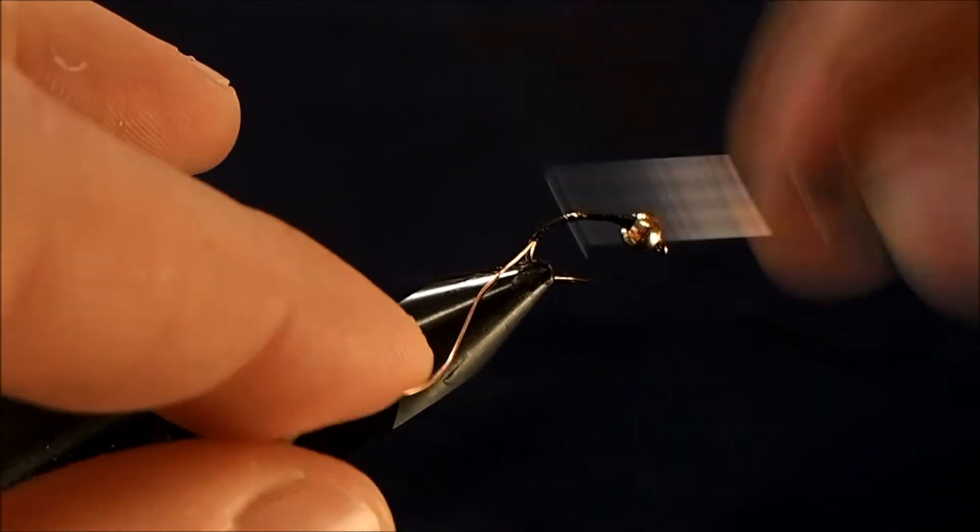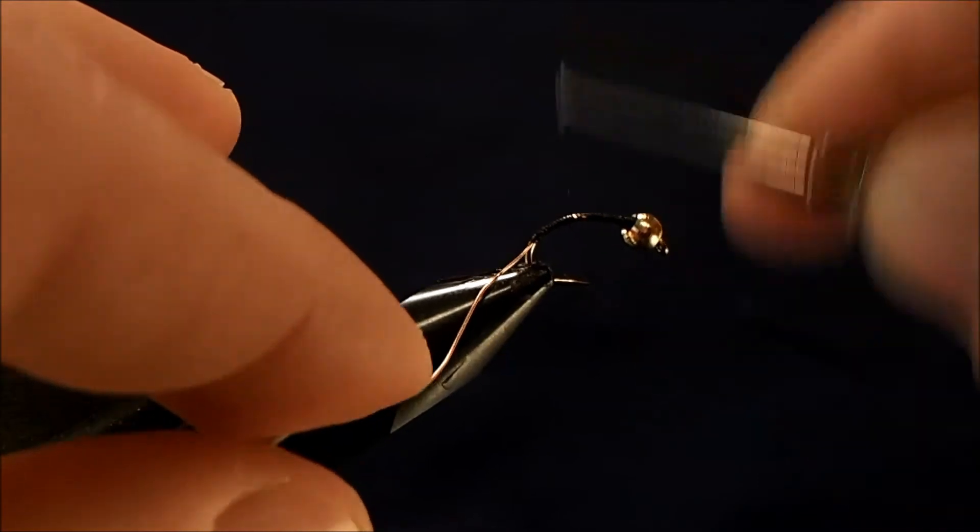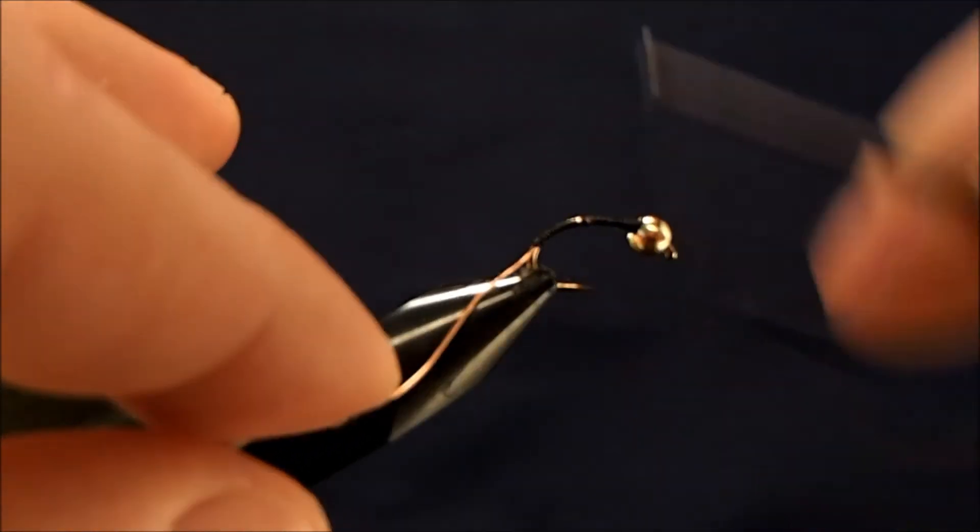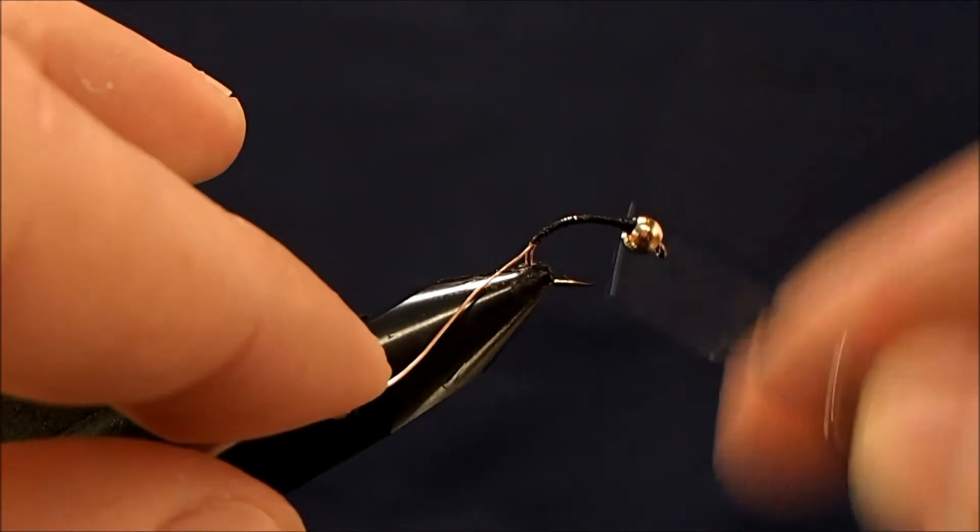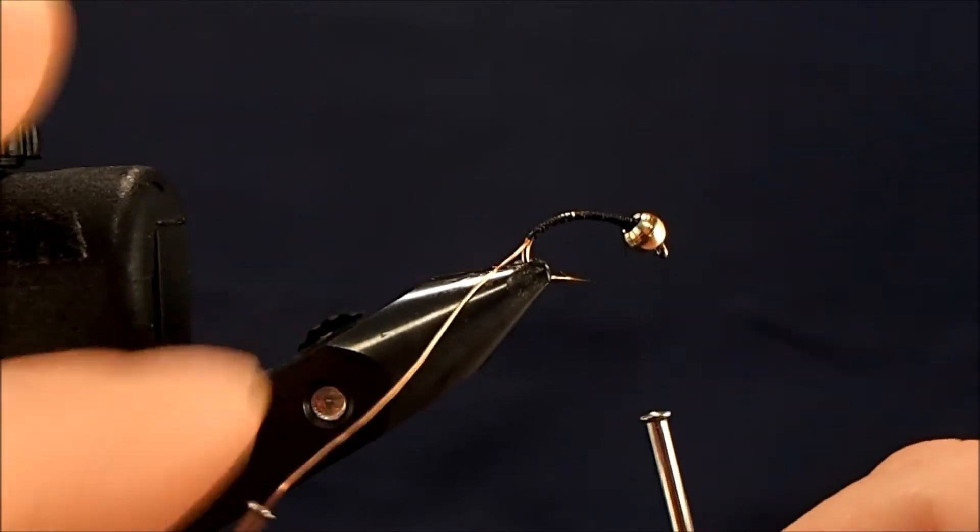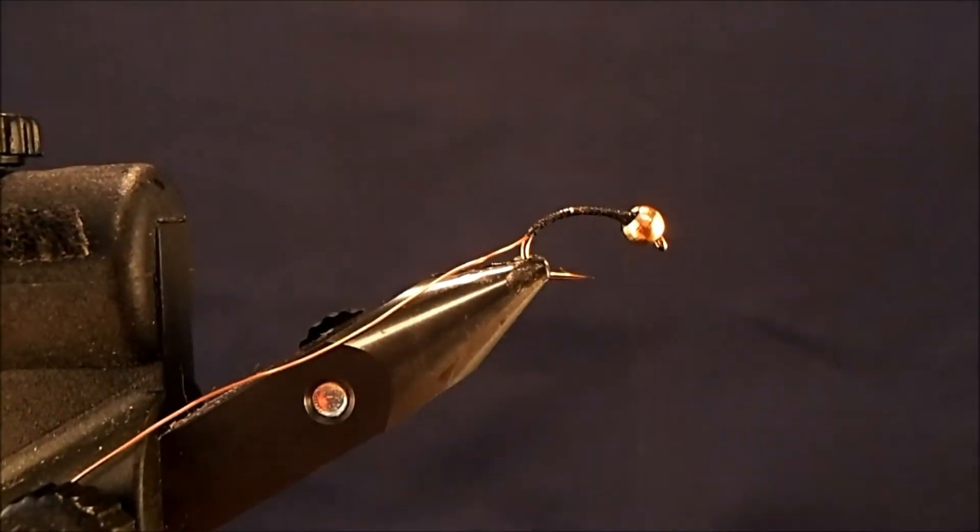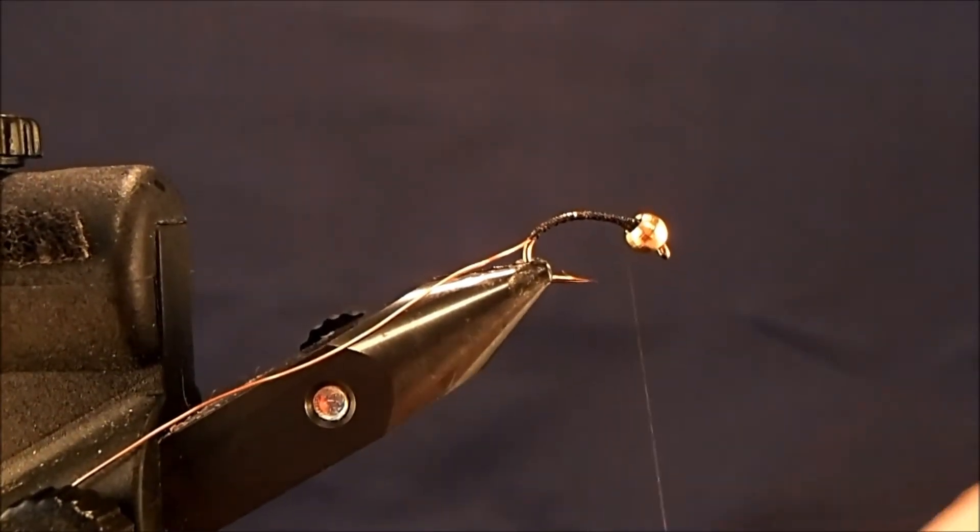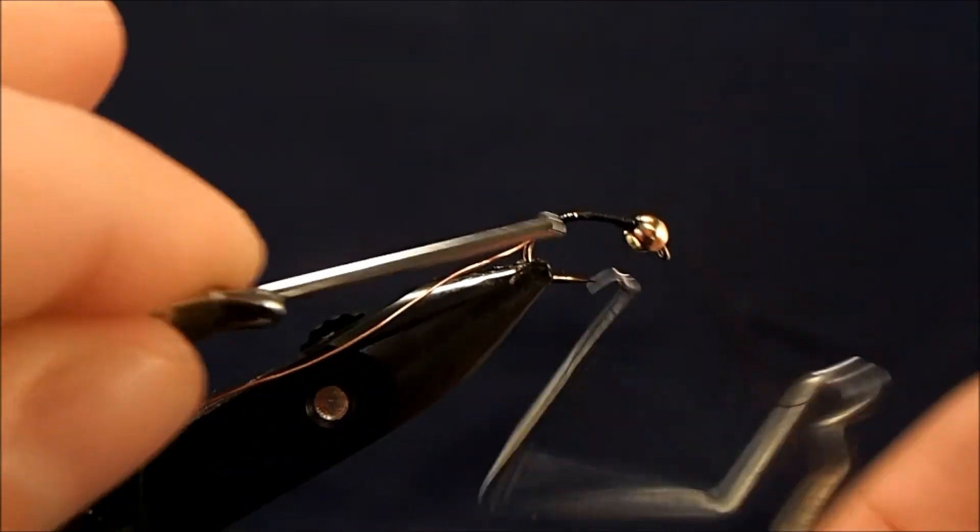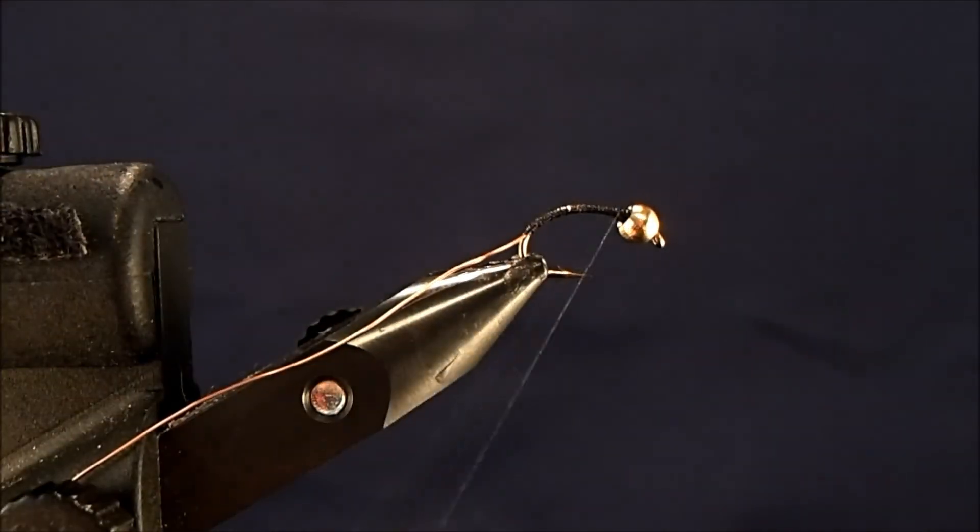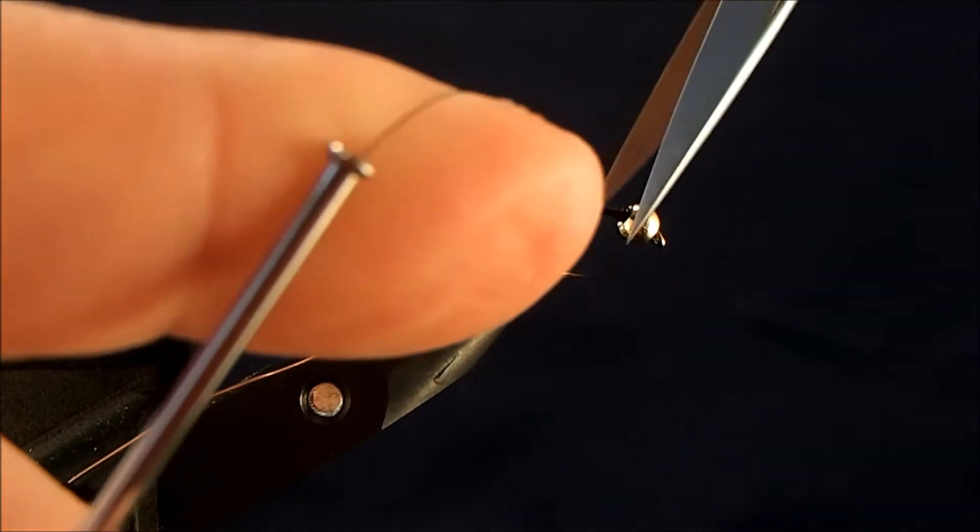Take nice even wraps all the way through. Try to clean up any high spots in this fly. When I'm happy with it, this isn't a necessary step, but I like to clear the deck. I'm going to take a couple of whip finishes just to give me some room to work here.